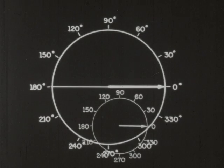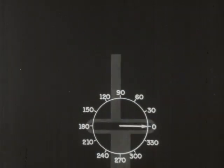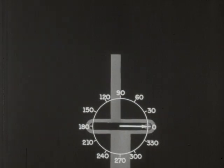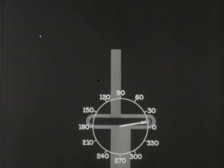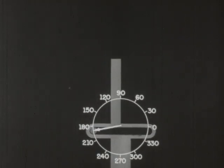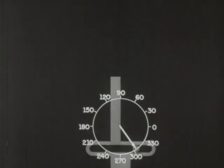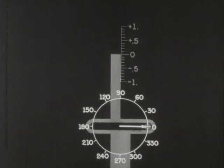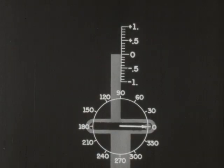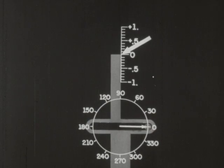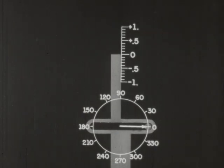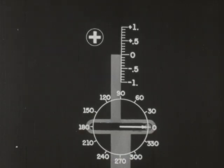To simplify the job of plotting, we'll attach a rider to the vector. When the vector turns, the rider moves up and down. If we place a scale alongside the arm of the rider, we can use the scale to read the sine of any angle. The center of the scale is marked zero; measurements above zero are positive, those below are negative.